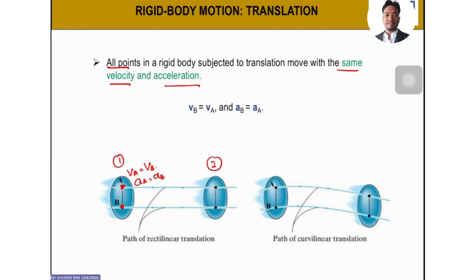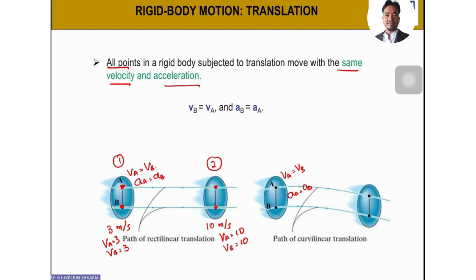For curvilinear translation, the same applies: V_A equals V_B, and A_A equals A_B. For example, if the object moves at 3 m/s at position one and 10 m/s at position two, then V_A = V_B = 3 at position one, and V_A = V_B = 10 at position two. It's like travelling by car from Melaka to KL — every person in the car moves at the same speed.